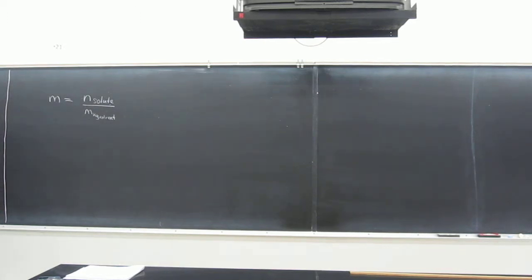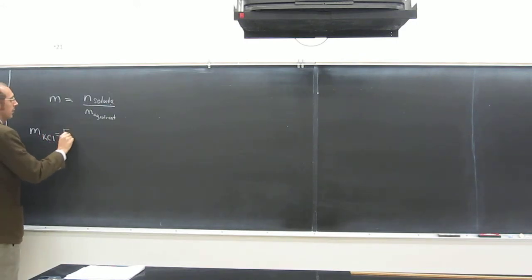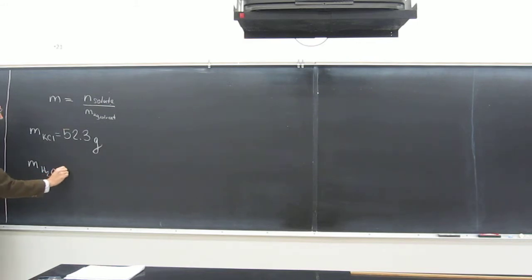So let's go ahead and do this problem that says calculate the molality of a potassium chloride solution containing 52.3 grams of potassium chloride and 3.01 kilograms of water. So we know it wants us to calculate the molality, but it gives us the mass of both potassium chloride and water.